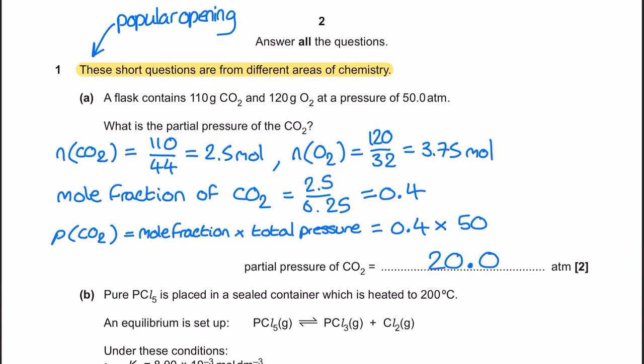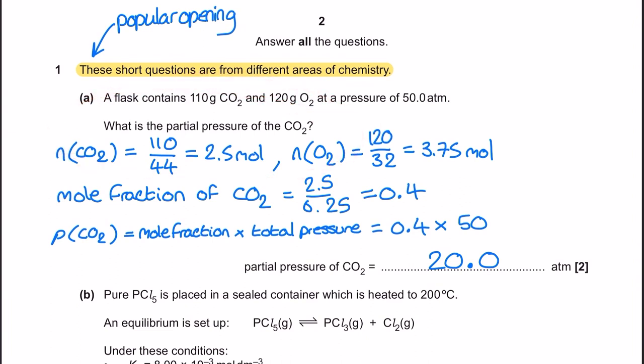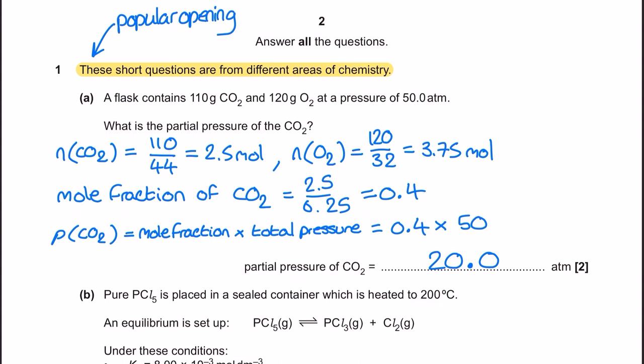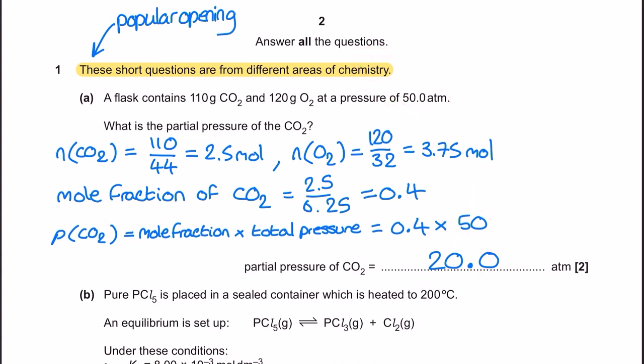Kicking off with question one, we've got a short intro telling us these questions are from different areas of chemistry — we've seen other Unified Chemistry exam papers start off this way. Part A is about finding the partial pressure of carbon dioxide. Just because this is a Unified Chemistry exam paper doesn't mean the calculation has changed. To find the partial pressure of a gas we still need to do the mole fraction of that gas component multiplied by the total pressure. We've got the total pressure from the question — that's the 50 — but we haven't got the mole fraction of the CO2.